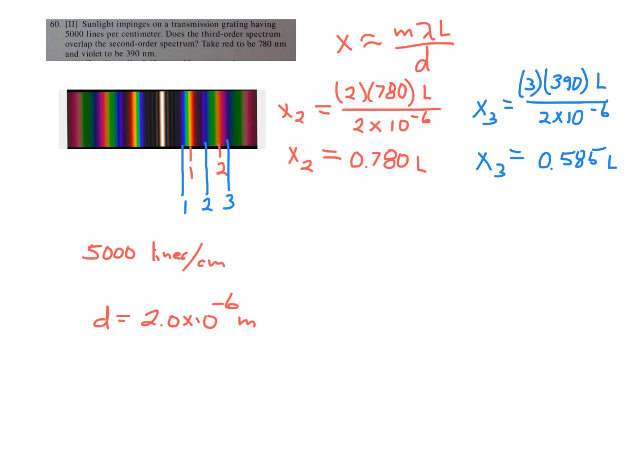should be 0.780L, L being how far from the screen you are. You could pick one meter for L if you want. They didn't tell us what L is, but it's the same for all the colors, specifically here, the violet and the red. But I just plugged into the x equals m lambda L over d, and we got that value.